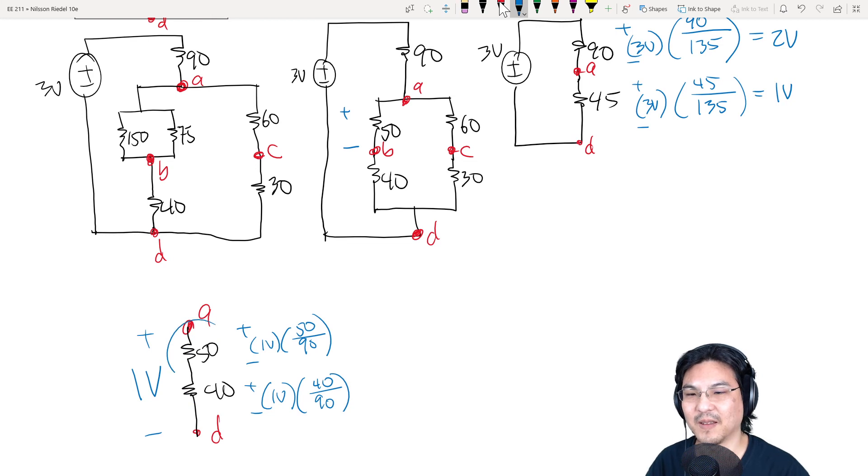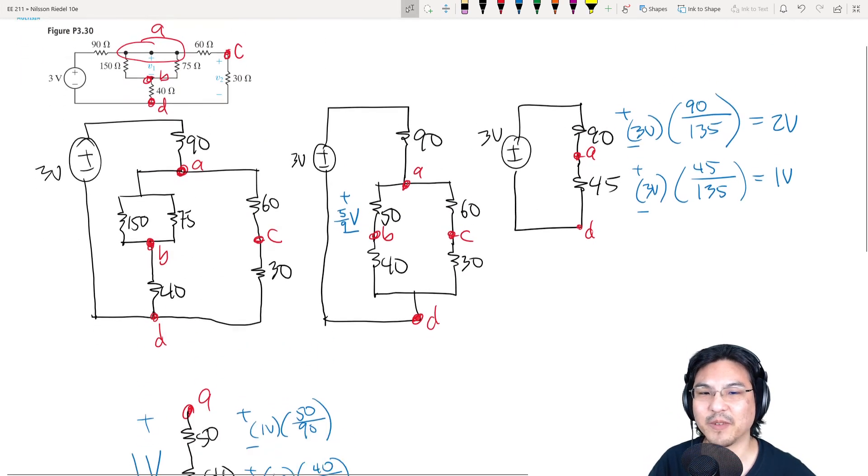Right? So here to here is 5 ninths of a volt. Here to here is 4 ninths. So that's, we got our answer 5 ninths right here, 5 ninths. That's V1. And then what's the other one? V2.